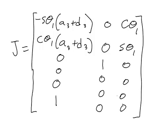We've already looked at how to use this Jacobian matrix for forward velocity — finding end effector velocities when joint velocities are known. Next, we'll look at inverse velocity: given the end effector velocities, finding the joint velocities that produce that end effector motion.